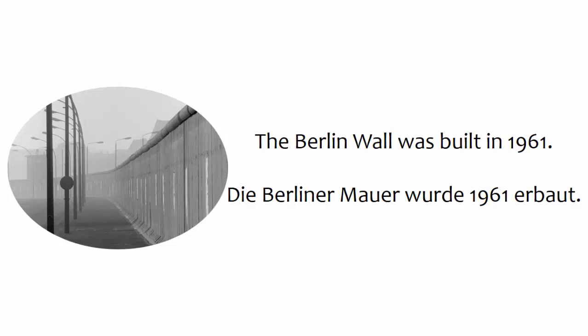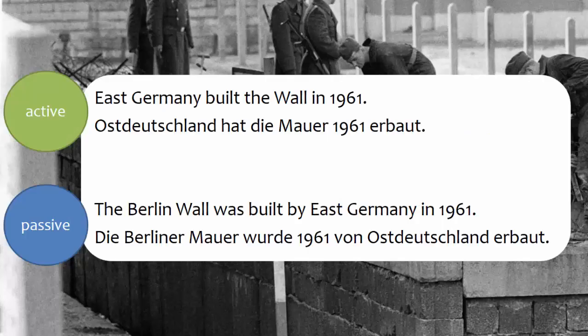In this example, the Berlin Wall did not build something. Rather, the Berlin Wall was built — the action happened to the subject, therefore passive is required. Most or perhaps all ideas in the passive can also be rendered in the active, as you see here. In both sets of sentences, the same event is described, namely the construction of the Berlin Wall. The difference is that the first set of sentences is in the active, and the second set is in the passive.